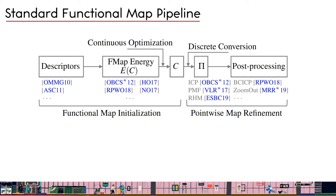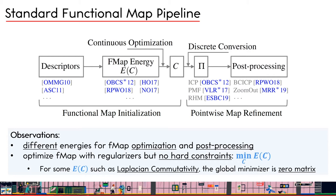There are two major observations of this pipeline. First, different energies are used for the functional map initialization step and the point-based map refinement step. Second, a functional map is usually optimized with regularizers but without hard constraints, which can lead to undesirable local minima. For example, if we optimize the commonly used Laplacian commutativity energy without any hard constraint, the global minimum is the zero matrix.